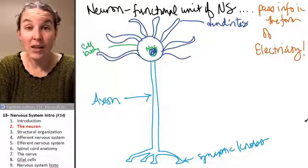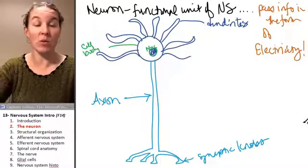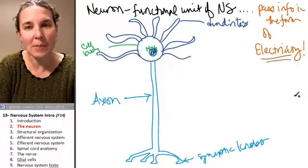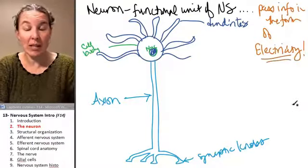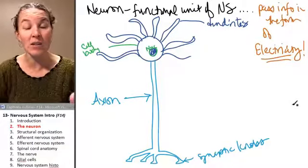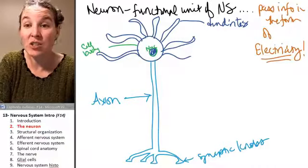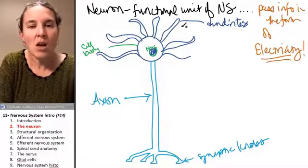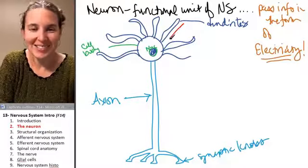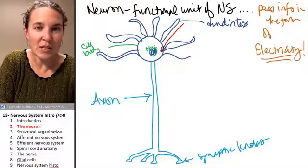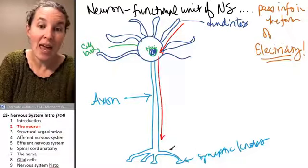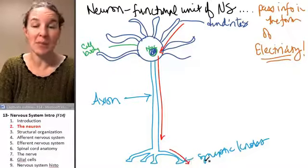Neurons are electrical cells. And how they do this is a topic that you will deal with in physiology. What you have to accept is that information in the form of electricity can pass from one end of the neuron to the other. And that's directional. So information comes in electricity, comes in through the dendrites, and travels down through the axon, and out through the synaptic knobs.